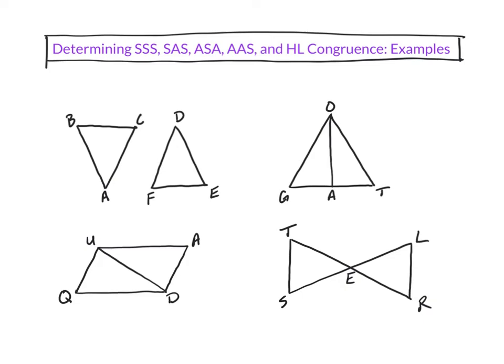Being new to triangle congruency, I wanted to do a few examples of just determining whether triangles are congruent or not, and then by what shortcut they are congruent. So I have a few different diagrams here, and I'm going to start with the one in the upper left.